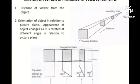This slide shows the two factors that affect how the perspective view will look. The two factors responsible for the appearance of a perspective view are: first, the distance between the observer and the object; and second, the orientation of the object — how the object is placed with respect to the picture plane. These are the two important factors that decide how the perspective projection will look.